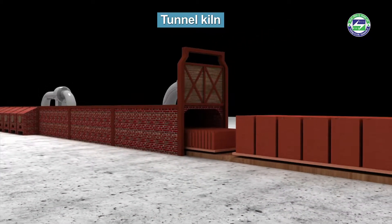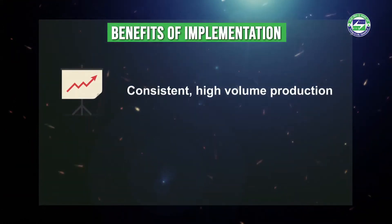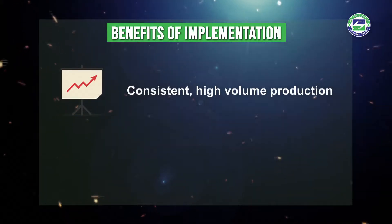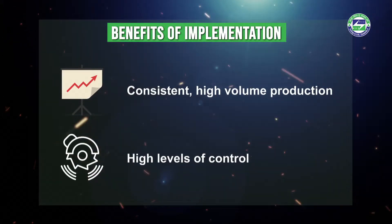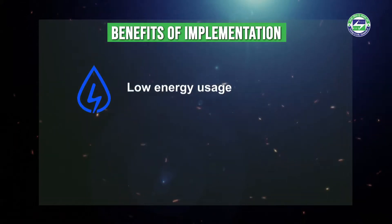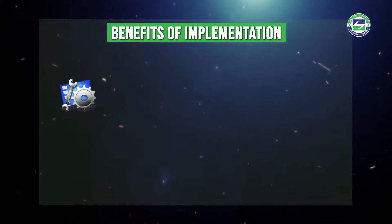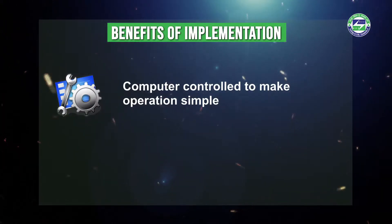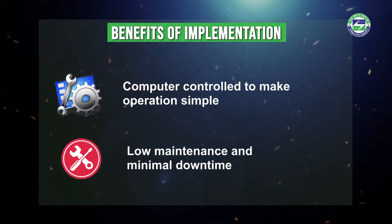In simple terms, there are two types of furnaces: the batch type and the continuous type. The recent industry is also shifting to continuous furnaces to save fuel, reduce pollution and increase production. Benefits of the tunnel kiln include consistent high volume production, high levels of control giving top quality products, low energy usage and lower cost production, computer controlled operations that are simple and reliable, and low maintenance with minimal downtime.